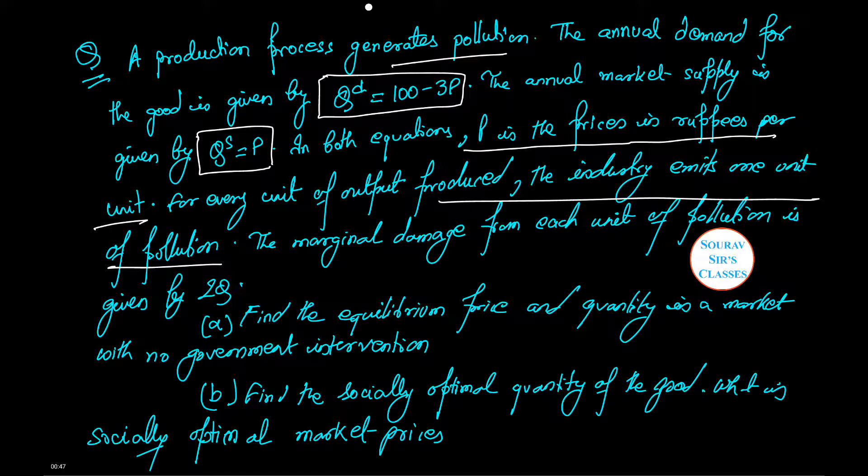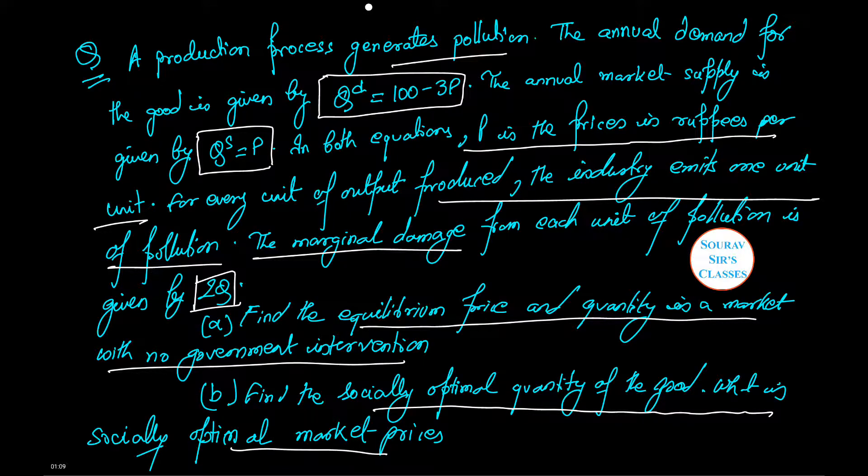The marginal damage from each unit of pollution is given by 2Q. So, at first we need to find the equilibrium price and quantity in a market with no government intervention. And next we will find the socially optimal quantity of the good and what is its socially optimal market price. Let's see how to do these questions.